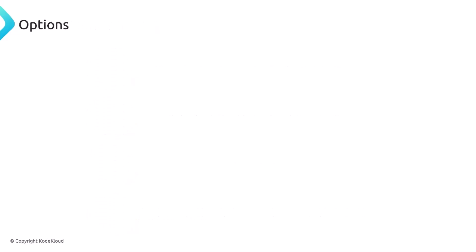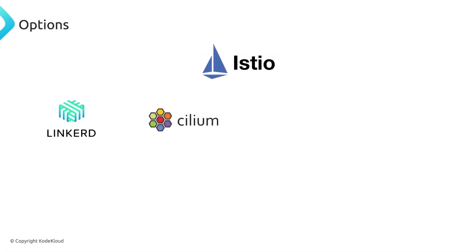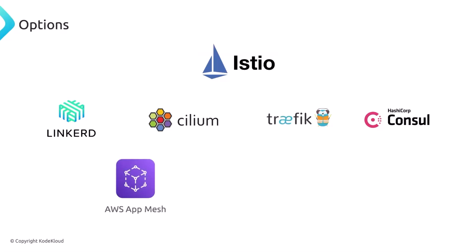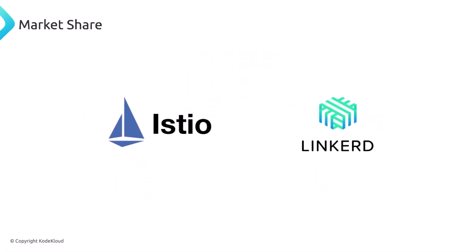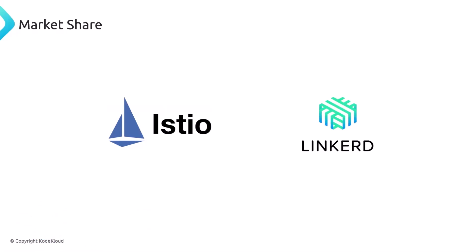There are many service mesh options. We have Istio, my personal favorite, but you also have other options like Linkerd, which is very popular. There's Cilium, another great tool that actually doesn't use sidecars at all. Traefik is another good tool. HashiCorp's Consul is also another option, and AWS has one called App Mesh. Nginx Plus offers a service mesh as well. Istio definitely stands out as the most used service mesh around the world, followed by Linkerd — it just offers more features.